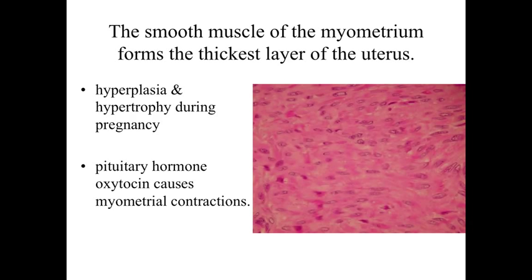The myometrium is going to be able to undergo hyperplasia — production of additional smooth muscle cells — and hypertrophy, where the cells become larger, in response to hormones during pregnancy. This results in thickening of the already thick uterine wall to prepare for childbirth. Later on, the pituitary hormone oxytocin synchronizes these smooth muscle cells to allow for the very forceful myometrial contractions associated with childbirth.